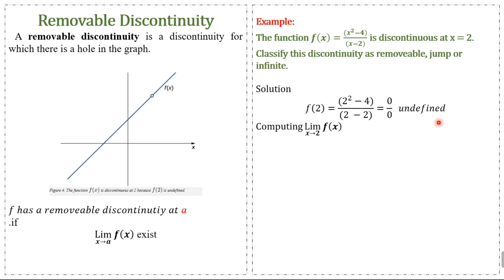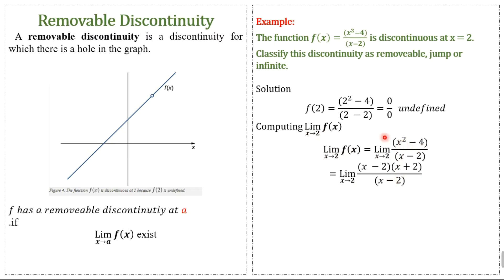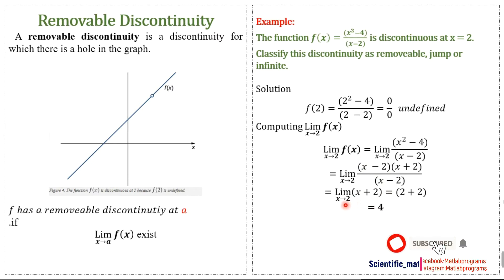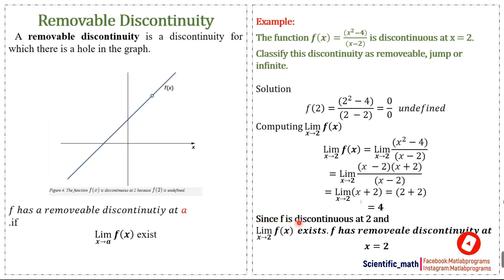We compute the limit of f(x) as x approaches 2. We simplify using the difference of squares formula a² - b², cancel out the (x - 2) terms, and after applying the limit we get 4. Since f is discontinuous at 2 but the limit exists and equals 4, f has a removable discontinuity at x = 2.